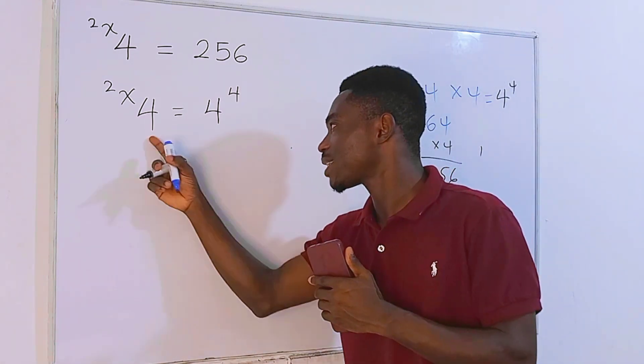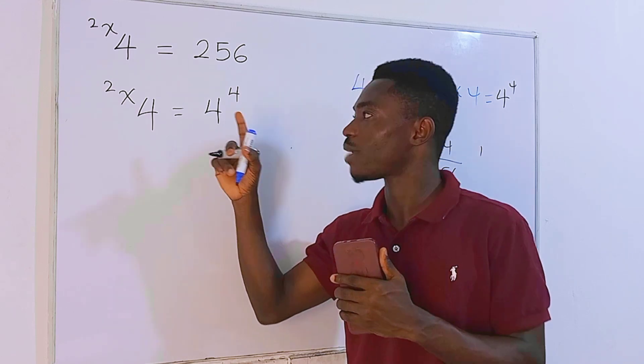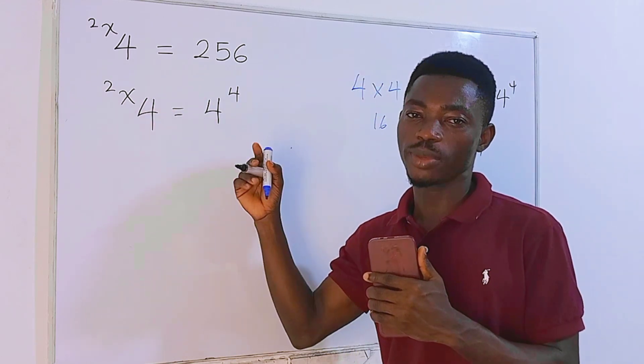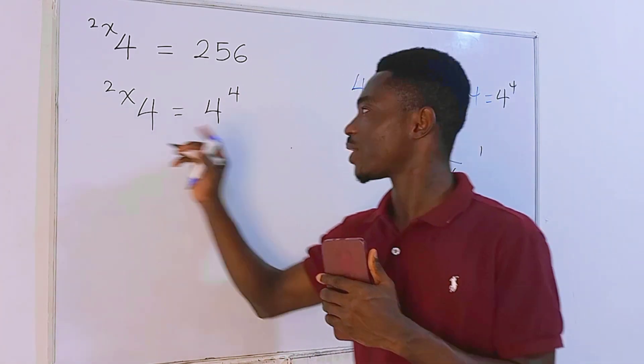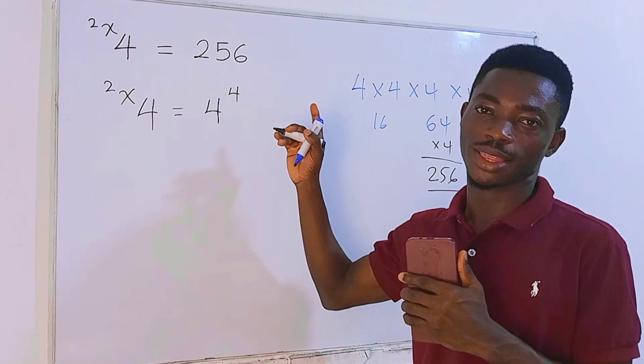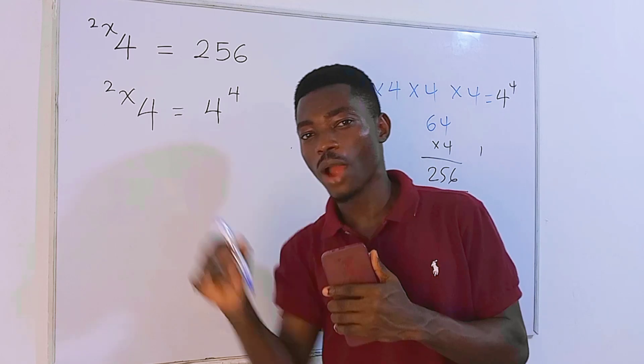Now let's check this. The bases are the same, but we can never equate their powers simply because on the left hand side of the equation we have a tetration term, and on the right hand side we have an exponential term. So they are not equal. We can never equate their powers.